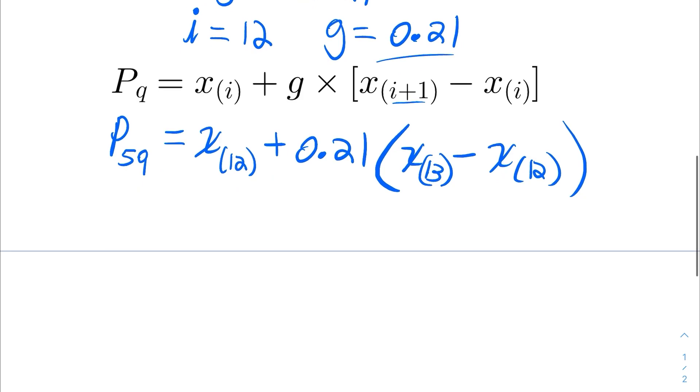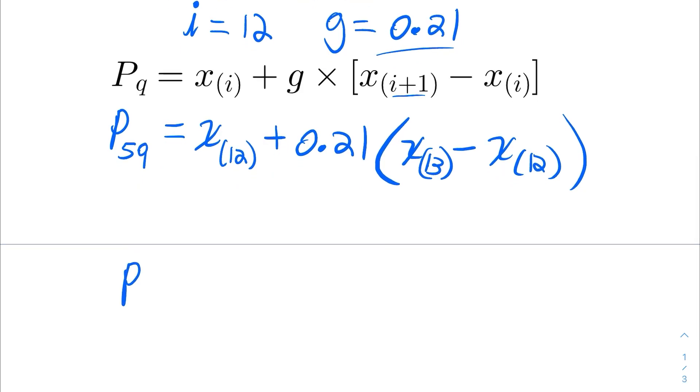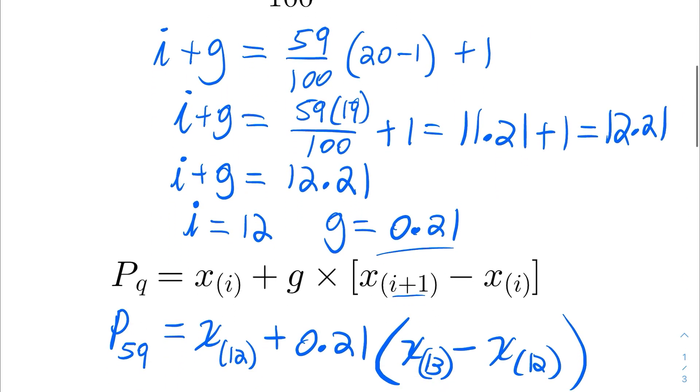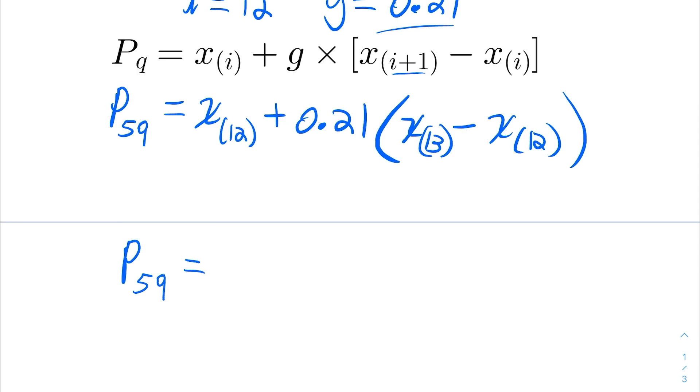So, I just need to go into that ordered list and find the 12th and 13th number in order and plug them in here. Let's see, the 12th and 13th number. We have 5, 10, and then that's 11, 12. So, the 12th number is 268, and the 13th number is 278. So, X12 is 268, that's the 12th number in the ordered list. And I also have that X13 is 278. That's the 13th value in the ordered list.